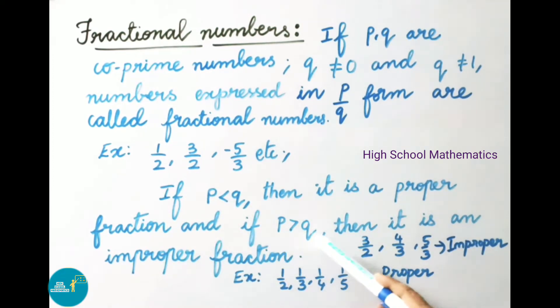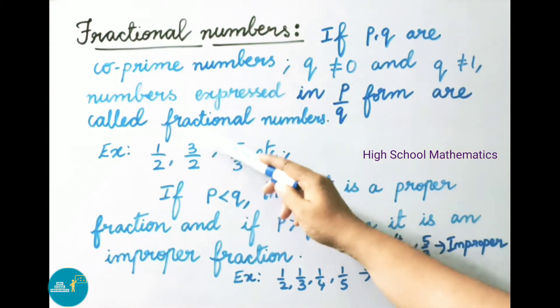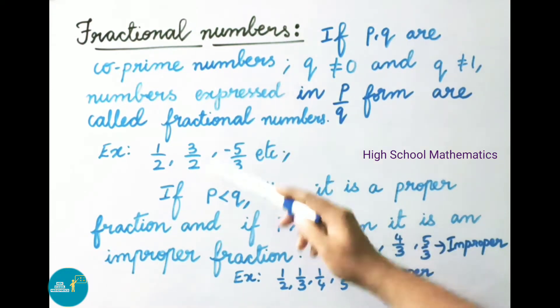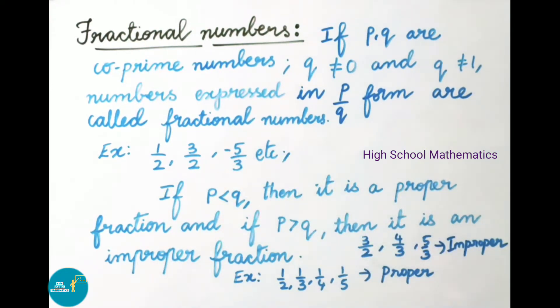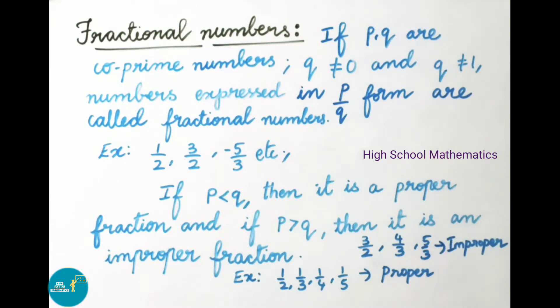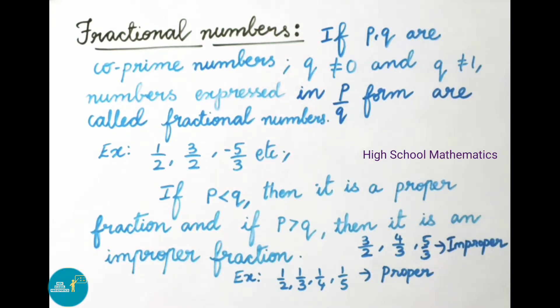Next, if P value is greater than Q, then it is an improper fraction. Examples: 3/2, 4/3, 5/3, etc.